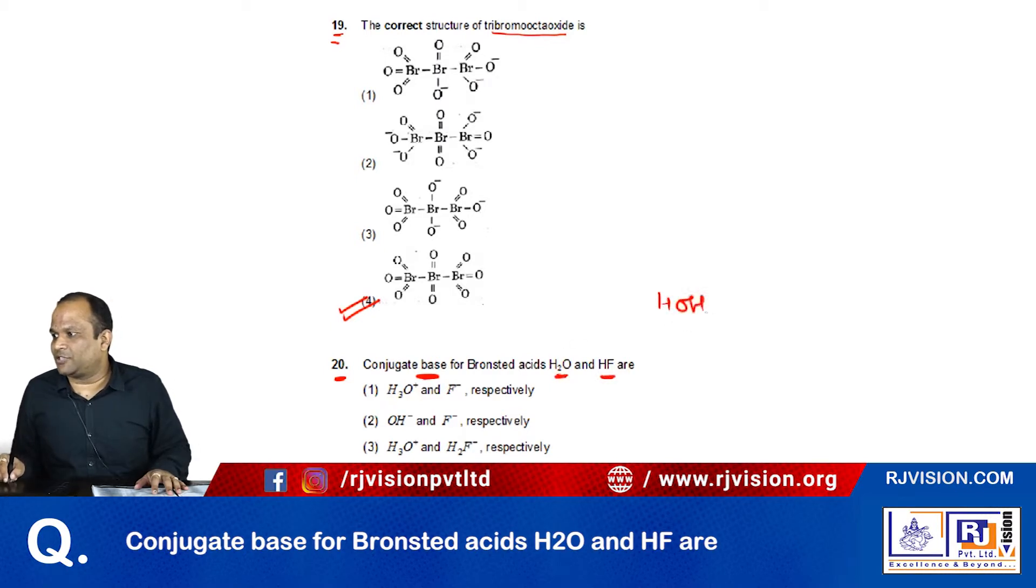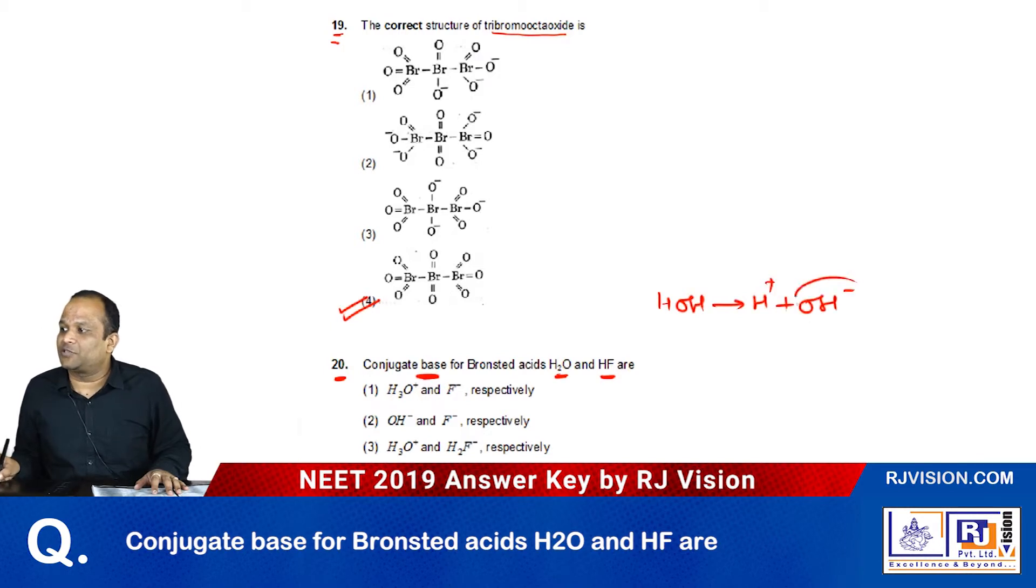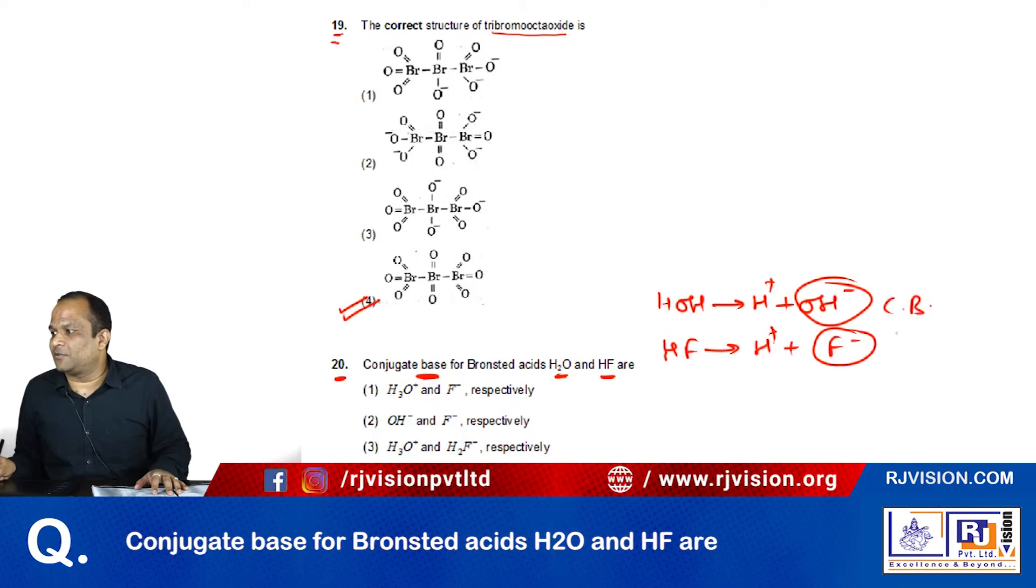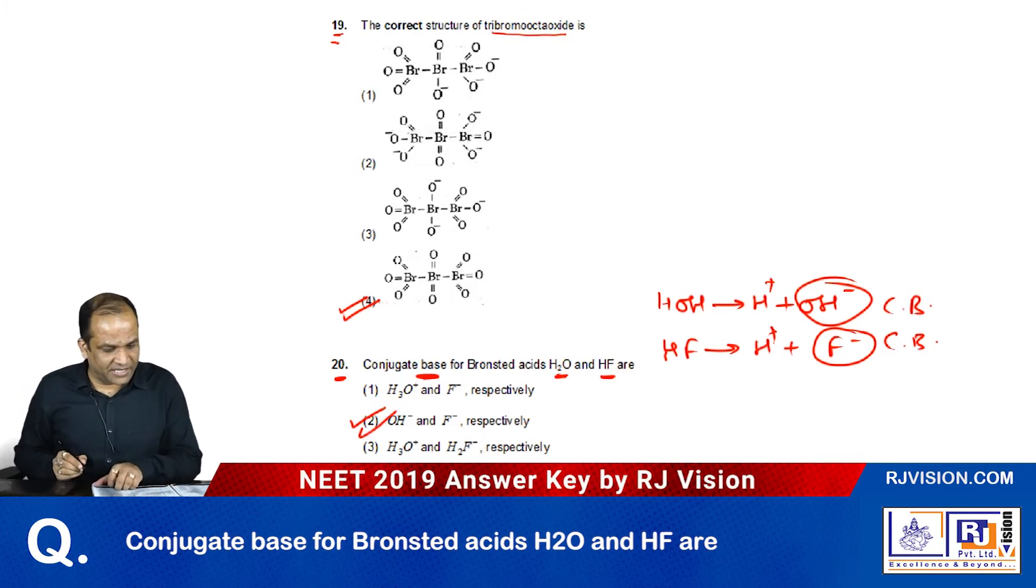In H2O, if we remove H+, it is converted into its conjugate base OH-. And if H+ is removed from HF, the conjugate base formed is F-. These are conjugate bases, so the answer is the second option: OH- and F- respectively.